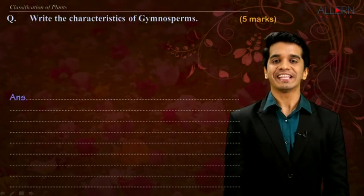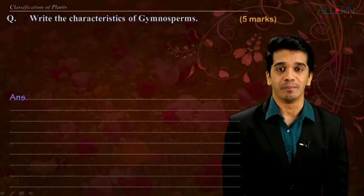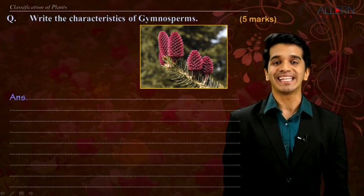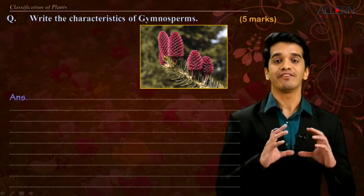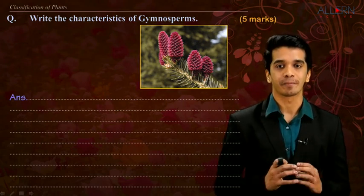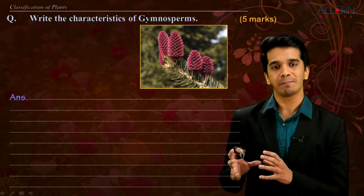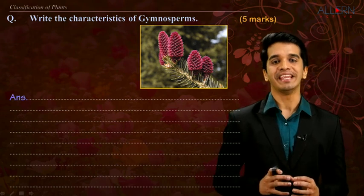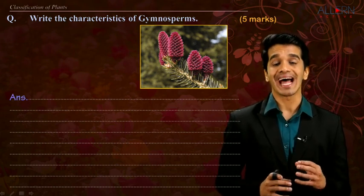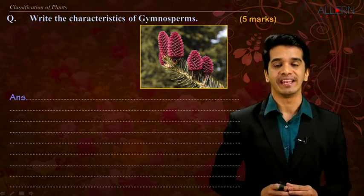Now let us study the characteristics of gymnosperm. Gymnosperm means naked seeds — that means the seeds do not have a covering, they do not have a fruit. These plants are perennial, they are woody, and they are evergreen.